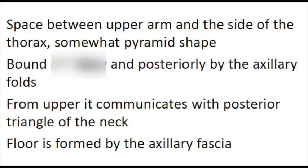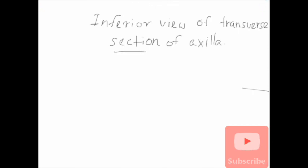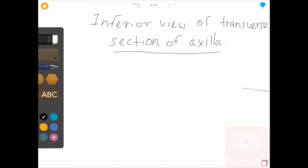As I mentioned earlier, axilla is somewhat pyramid in shape, so it has four walls, an apex, and a base. Let's see what are the boundaries of the axilla. This is the inferior view of a transverse section of the axilla. Now I am going to mark anterior, posterior, medial, and the lateral walls.